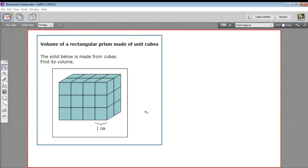In this problem, we're being asked to find the volume of a rectangular prism that's made up of unit cubes, and a unit cube is just a cube that's 1 in length on each of its sides. So these are 1 cubic centimeter cubes.